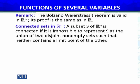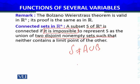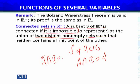Connected sets: A subset S of RN is connected if it is impossible to represent S as the union of two disjoint non-empty sets such that neither contains a limit point of the other. This means: the closure of A intersected with B is the empty set, and B's closure intersected with A is also the empty set.